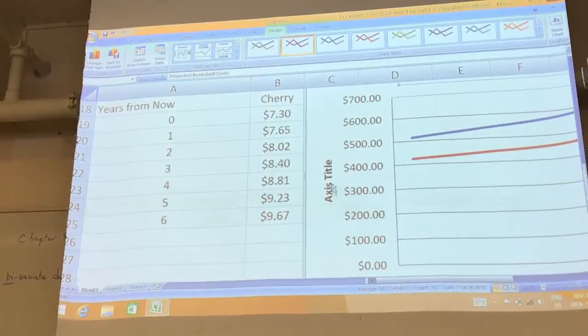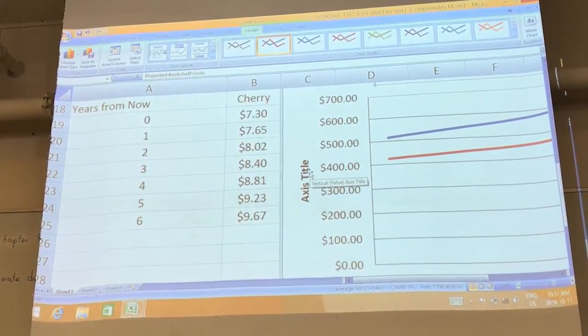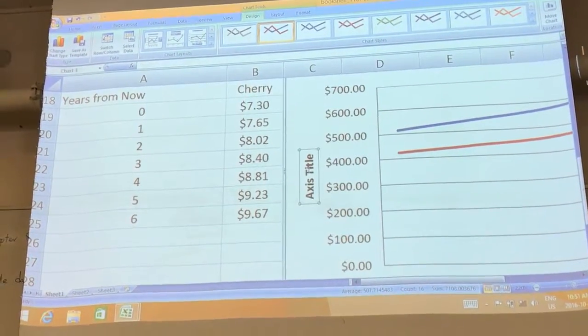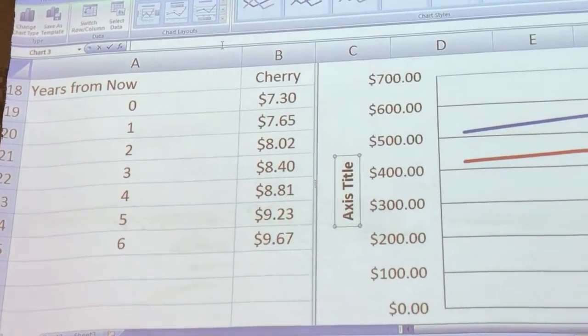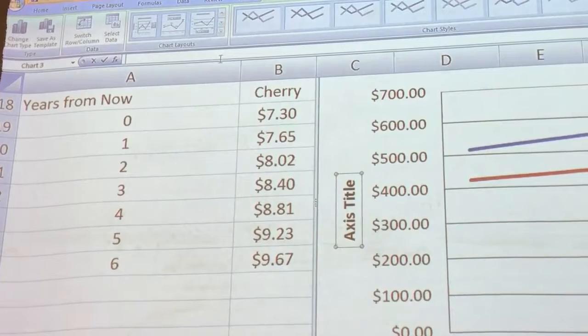And do you see axis title? Let's also click it and then we're going to type what? Y-axis. It's called Total Cost.